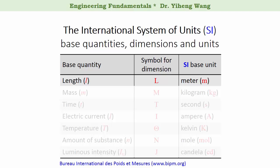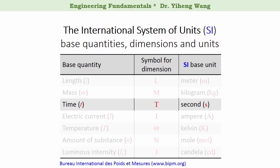We already mentioned length. As a base quantity, its symbol is small-case italic L; as a dimension, its symbol is capital L; and its SI base unit is meter. Then we have the base quantity mass. As a dimension, its symbol is capital M, and its SI base unit is kilogram. Many people think the base unit for mass is gram — it is not; it should be kilogram. We also already mentioned base quantity time. As a dimension, its symbol is capital T, and its SI base unit is second.